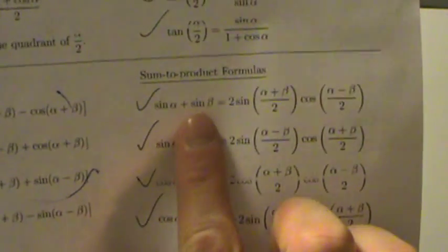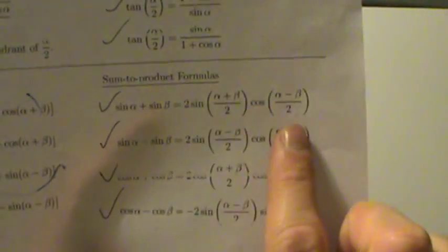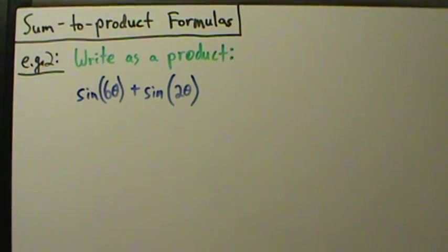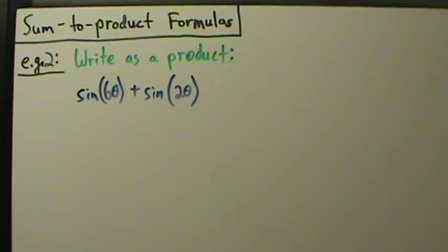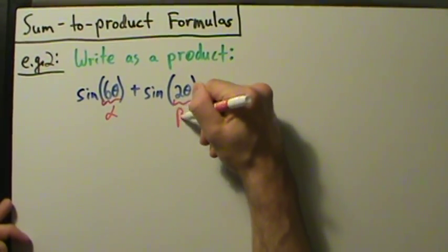So here we have sine of something plus sine of something else. We're going to use this first formula: sine alpha plus sine beta is two sine alpha plus beta over two times the cosine of alpha minus beta over two. Six theta is going to be our alpha and two theta is going to be our beta.